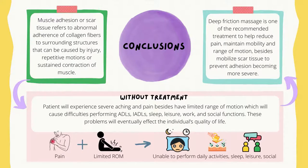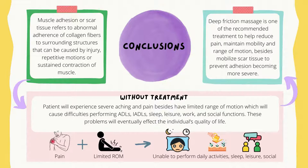Moving on to the conclusion, muscle adhesion or scar tissue refers to abnormal adherence of collagen fibers to surrounding structures that can be caused by injury, repetitive motions, or sustained contraction of muscle. Without treatment, patients will experience severe aching and pain besides having limited range of motion, which will cause difficulties in performing activities of daily living such as bathing or grooming, instrumental activities of daily living such as meal preparation and laundry, sleep, leisure, work, and social functions. These problems will eventually affect the individual's quality of life.